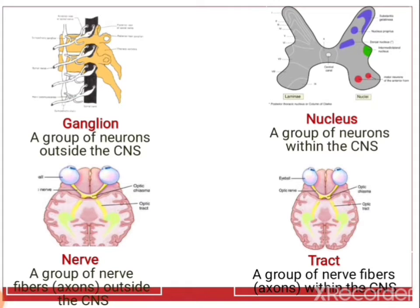Some important terms: a ganglion is the collection of nerve cell bodies outside the CNS, while the corresponding collection of nerve cell bodies inside the CNS is known as a nucleus. CNS means brain and spinal cord. A nerve is the collection of axons outside the CNS, and the collection of axons inside the CNS is known as a tract.